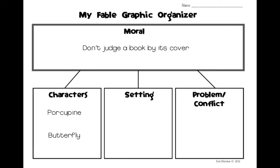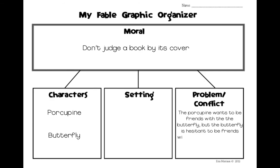I chose this because porcupines and butterflies are two very different animals that I don't really see getting along. After I figured out my moral, I decided what I wanted my problem or conflict to be — this is what you're going to write about the most. My problem is that the porcupine wants to be friends with the butterfly, but the butterfly is hesitant because he looks mean and scary with all of his pointy quills on his back.